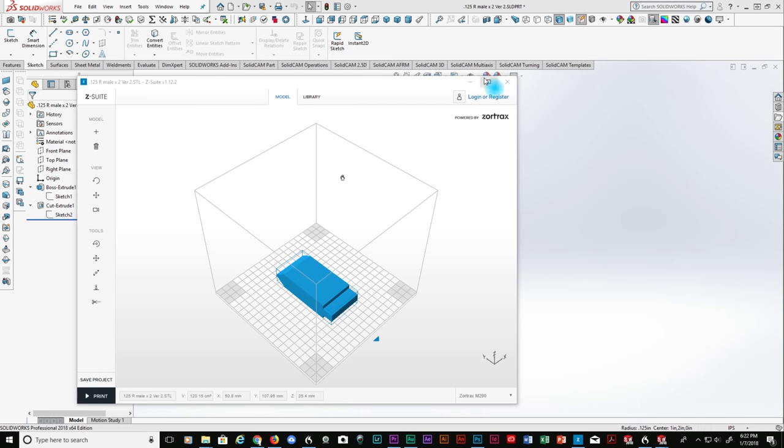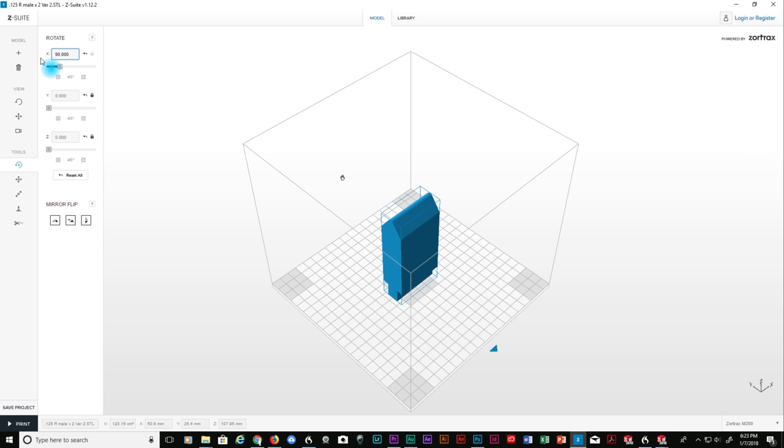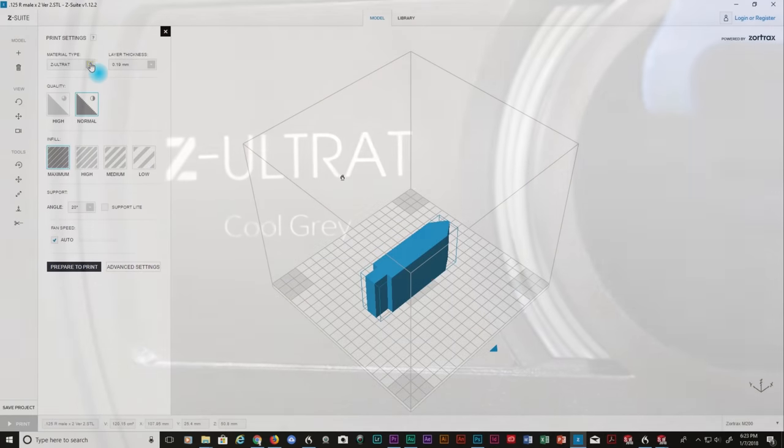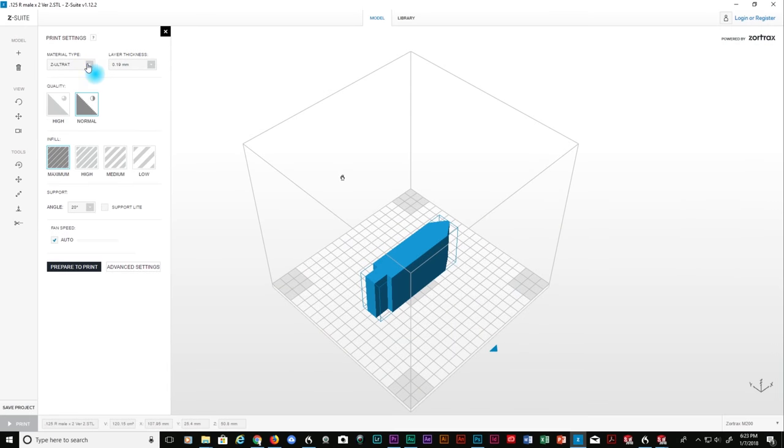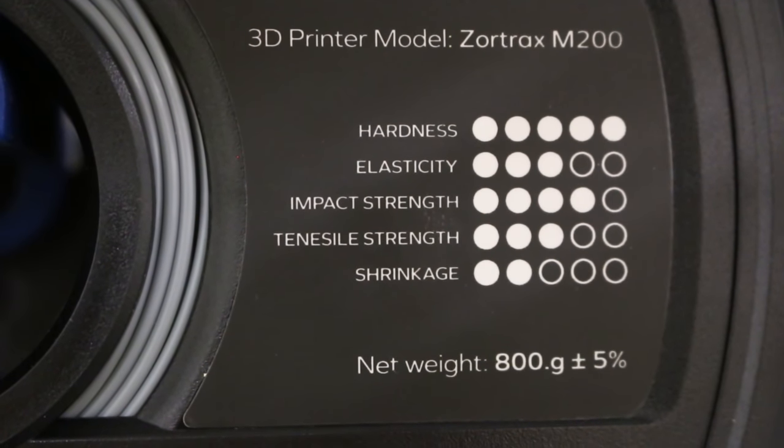That STL file could then be imported into the Zortrax slicing program. We then place the part on the build platform so that the layers of plastic would have the strongest orientation possible during the bending process. We then selected the highest density available for the 3D printing and we selected a material Z-Ultrat which is one of the higher density plastics with great impact resistance and good tensile strength.